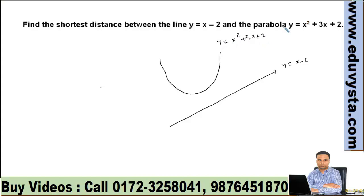How will we figure out the shortest distance? Any idea? How will we get the common normal? You compare the slope of this parabola to 1. Because the point at which we have common normal, at that point tangent will be parallel to this line.